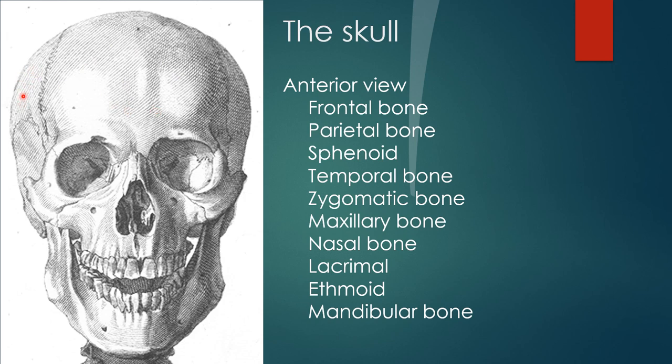Anytime you hear the word parietal, it usually refers to the top layer. For instance, if you have a sac around the heart like the pericardium — which means around heart — it has two layers: the visceral, touching the organ, and the parietal, the layer farthest from the organ. So this top bone is called the parietal bone. As we move down, you can see the sphenoid bone inside the eye socket. You can see the frontal bone in the eye socket too. I always tell people when looking at the skull: pinch it so you can see where each bone is on different views.